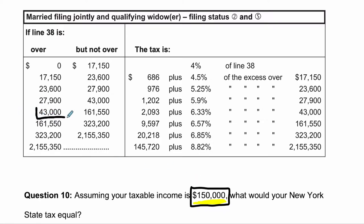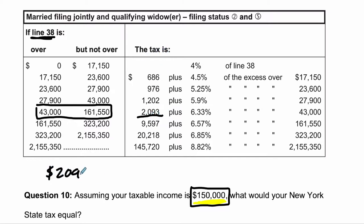$150,000 falls right here. If you look at the way these numbers are structured in the table, it says if line 38 — referring to a different part of our tax form — is over $43,000, but not over $161,550, so between those two numbers, and it is, the tax will be $2,093, plus 6.33%, so that's 0.0633. Just take that number, divide it by 100, and then these quotation marks just mean to repeat what you see up here.